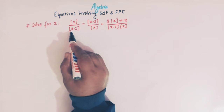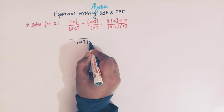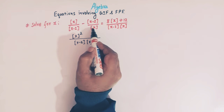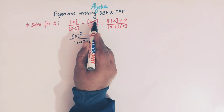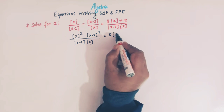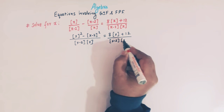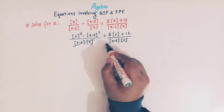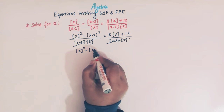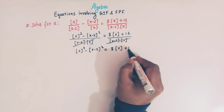Now let us solve this equation. We will first work on the right hand side by taking the LCM. So the LCM involves greatest integer of (x minus 2), greatest integer of x, and greatest integer of x squared. Multiplying through, we get greatest integer of (x minus 2) squared on one side and 8 times greatest integer of x plus 12 on the other.